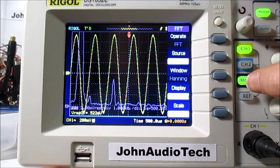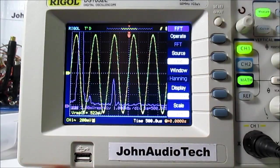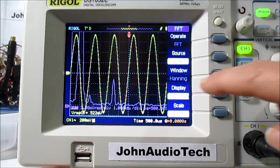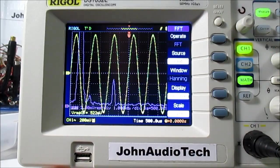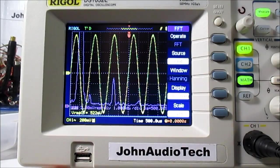So I hit the math button here, and it's already set for FFT. I want to use the Hanning window. That gives me the best display. And the blue waveform is the spectrum analyzer mode.